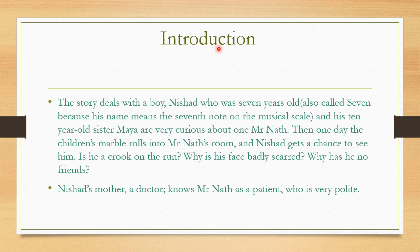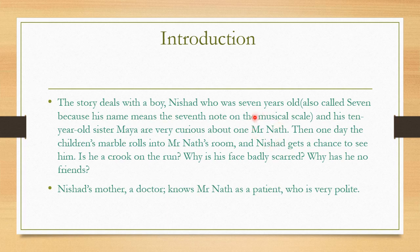Mr. Nath is their neighbor, and the children — Nishad and Maya — notice some unusual activities which they have never seen. The story deals with Nishad, who was 7 years old, also called Seven because his name means the 7th note on the musical scale, and his 10-year-old sister Maya. They are very curious about Mr. Nath. He was their new neighbor. They even referred to Mr. Nath as a crook — a dishonest person or a criminal — because when they observed his activities, they assumed he was a criminal.